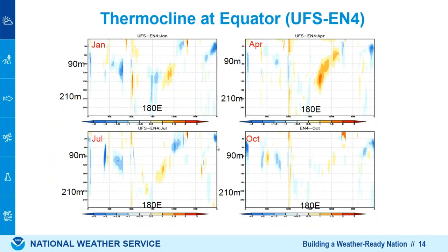Here is the subsurface temperature at the equator. You do not see a large area with really large bias. In the April case, in the eastern tropical Pacific around 150-meter depth, there is about a 1.5-degree warm bias. But overall, we do not see large bias. I was heavily involved in development of CFSv2 and did a similar comparison about 10 years ago — overall this figure is much better than CFSv2.